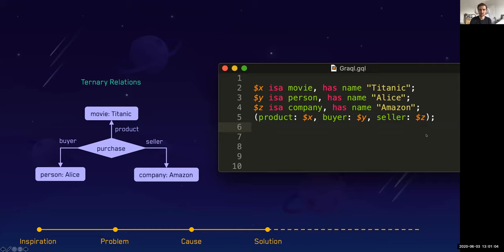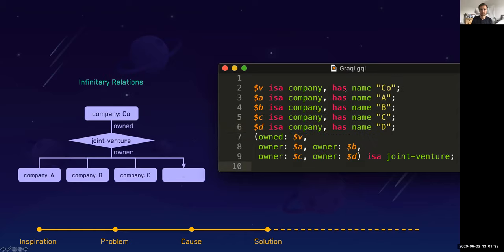We have ternary relations where we've got three role players. We can say a movie, a person and a company are all in one relation. By the way, if you're using something like a triple, you can't do that unless you reify your data. Reifying your data, although technically possible, introduces a lot of complexities by virtue of the reification process. We want to be able to natively represent higher order relations. That's where the hypergraph is so useful because the hypergraph effectively creates a set of vertices.